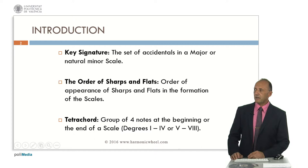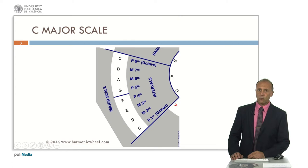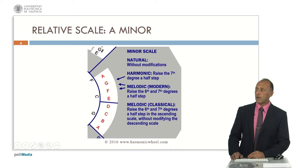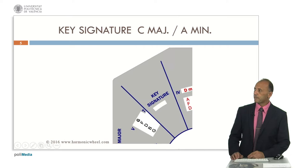The key signature is the set of accidentals in a major or natural minor scale. The order of sharps and flats refers to the order of appearance of them in the formation of the scales. A tetrachord is a group of four notes at the beginning or the end of a scale, that is degrees one to four or five to eight. We will start with C major scale as well as its relative minor, A minor scale. The relative minor is always a minor third below the major key.